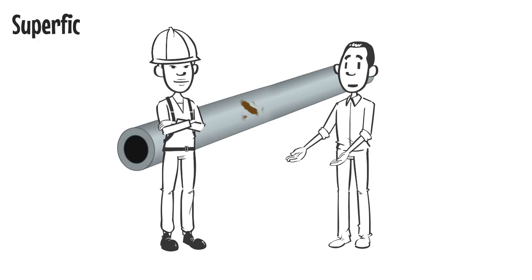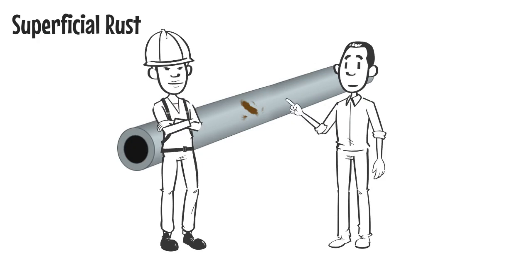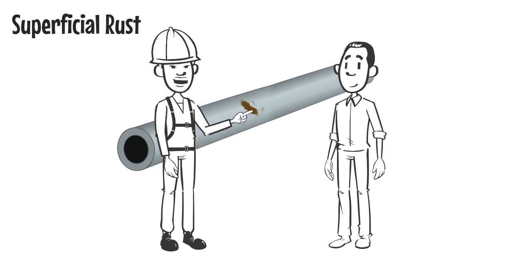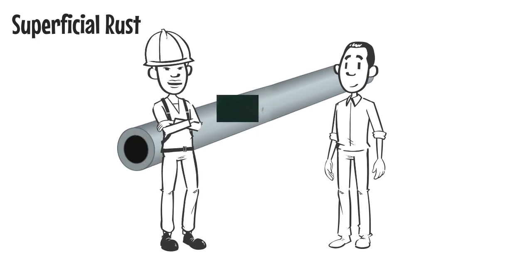Okay, so superficial rust doesn't sound that bad. You're right. It's not that bad. Superficial contamination with non-corrosion resistant materials has no detrimental effect on CRA materials. Superficial rust is not bonded to the surface of the pipe.